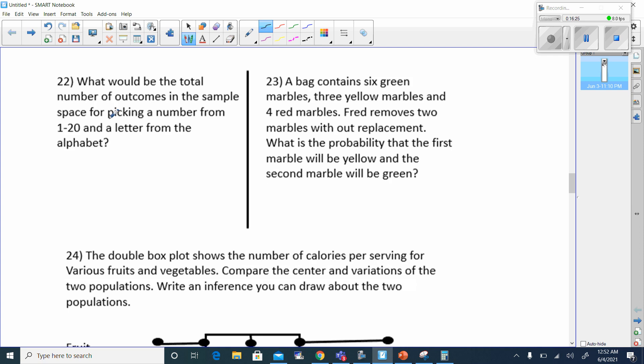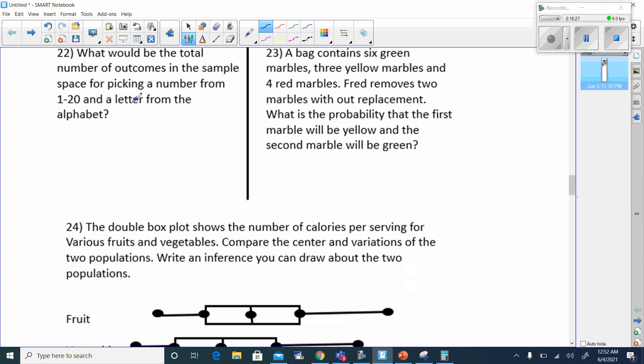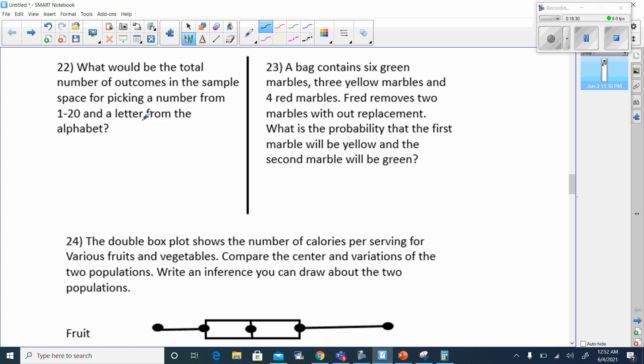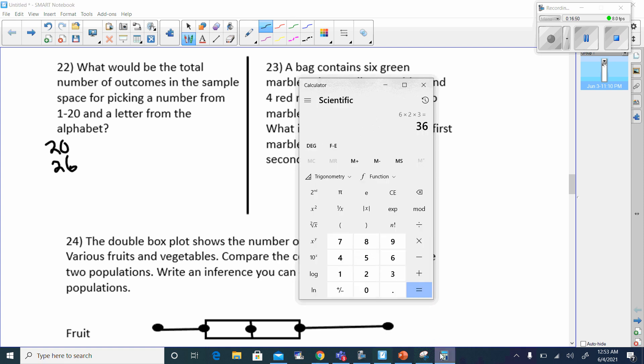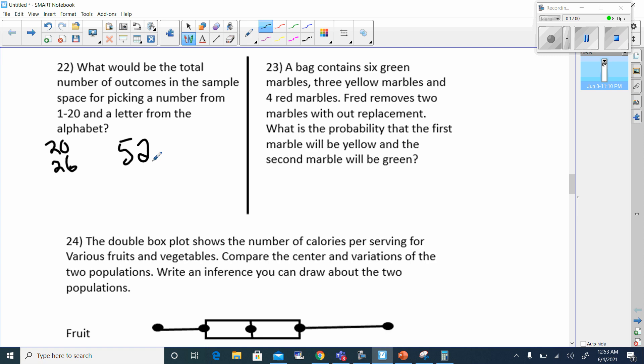Number 22, what would be the total number of outcomes in a sample space for picking a number from 1 to 20 and a letter from the alphabet? A number from 1 to 20, that's 1 out of 20. A letter from the alphabet, there's 26 letters in the alphabet. So we'd have to take the total number of outcomes, we'd have to take 20 and multiply it by 26. That's going to give me 520 different possible outcomes.